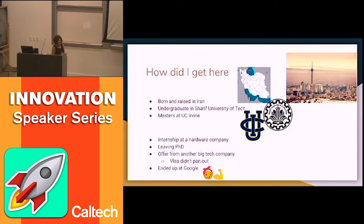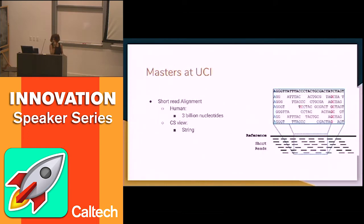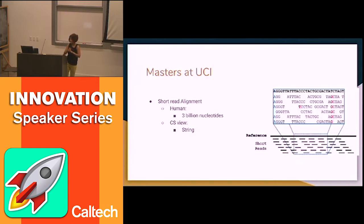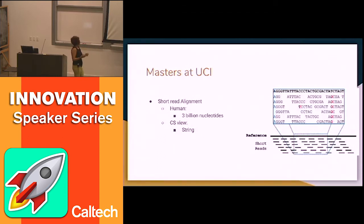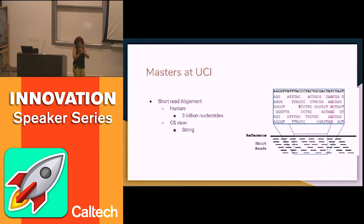I've been at Google about four years now. I also want to talk about what I worked on for my master's at UC Irvine — I think it was an interesting problem. What I did was short read alignment. Humans have DNA that is about three billion nucleotides. There are four types of them.